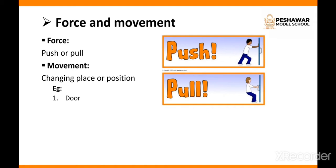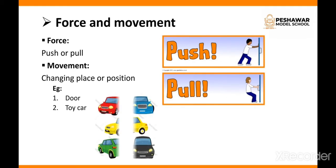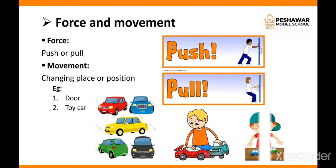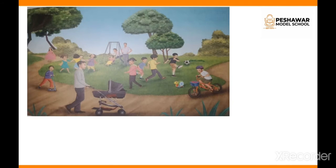For example, if we enter a room and want to close the door, we push the door to close it. When we want to open the door, we pull the door to open it. A second example is toy cars — these cars can't move by themselves, so we have to push them to make them move. When something changes its position, it's called movement.